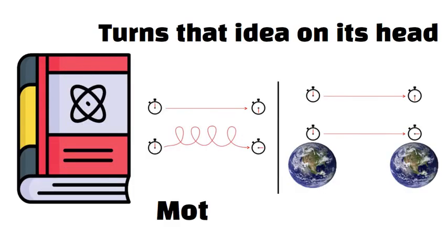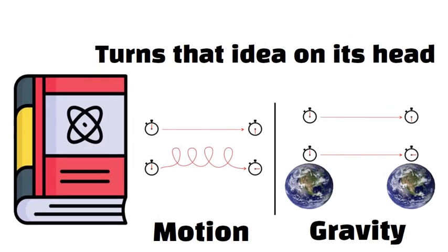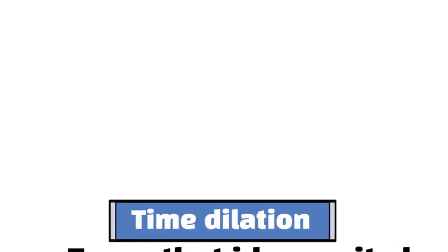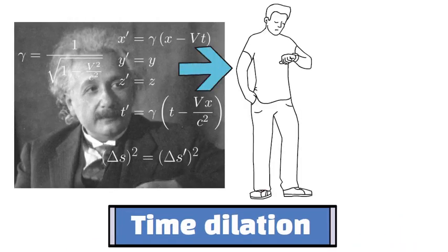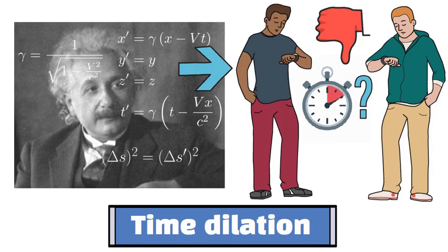Time is relative, varying based on motion and gravity. This concept, called time dilation, arises in Einstein's theory of relativity. It shows that two observers can disagree on how much time has passed, even if they start with identical clocks.